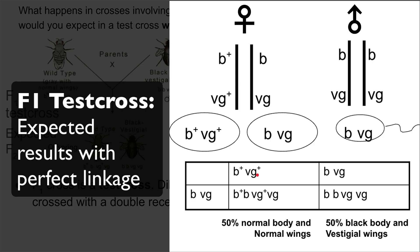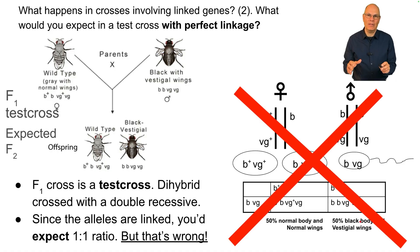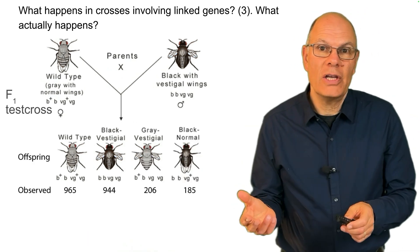In the Punnett square, half the eggs go one way and half the other, while all sperm carry B and VG. You'd expect half the offspring to be B+, B, VG+, VG — normal body and normal wings — and the other half to be B, B, VG, VG — black body and vestigial wings. That is what you'd expect under perfect linkage, but it's not what actually happens.